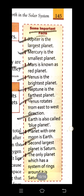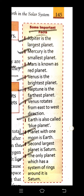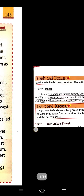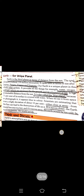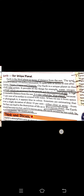Here are some important facts you should remember, as questions can come from these. Jupiter is the largest planet. Mercury is the smallest planet. Mars is the red planet. Venus is the brightest planet. Neptune is the fastest planet. Venus rotates from east to west. Earth is also called the blue planet. The planet with one moon is Earth. The second largest planet is Saturn. The only planet with a system of rings around it is Saturn.